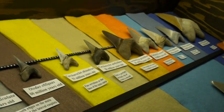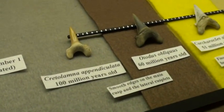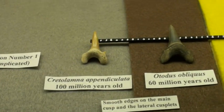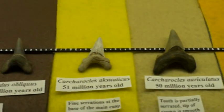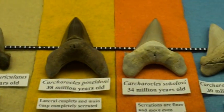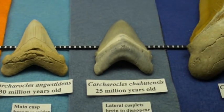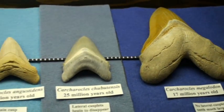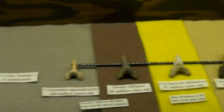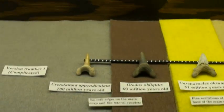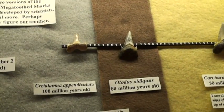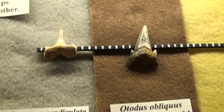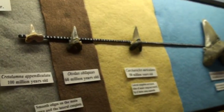Some of these teeth may be the same species, but this is the way it's been divided up. Version one is complicated — this would be the splitter version where we split up everything on very minute characteristics. That's this top row, showing the megatooth sharks with the evolution of Megalodon. The lower version here is the lumpers version, where you take more characteristics to divide things up and so you're not splitting them into so many different little categories.